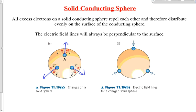Now, if you had 50 electrons there, the same analysis would apply — you just have 50 arrows acting on each, 50 forces acting on each electron as opposed to three. So we've got multiple forces of repulsion acting on all of these electrons, which push them to the outer surface.